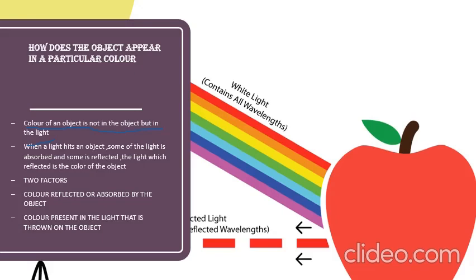The color of an object is determined by what color is absorbed or reflected and the color of the light. It depends whether you are going to use a white light, a red light, a green light, or any other light.